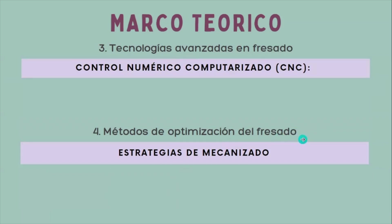Como cuarto tema está el método de optimización del fresado. Son estrategias del mecanizado, que son técnicas avanzadas para asegurar la precisión, eficiencia y calidad. Algunas técnicas son el fresado de alto rendimiento, que se enfoca en maximizar la tasa de remoción de material mientras se mantiene la integridad de la pieza y se minimiza el desgaste de la herramienta. El segundo es el fresado de alta velocidad, que se caracteriza por el uso de velocidades de husillo extremadamente altas, combinadas con bajas profundidades de corte y altos avances por diente.